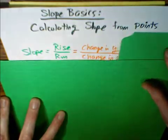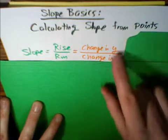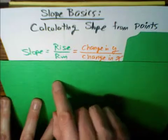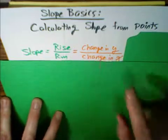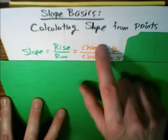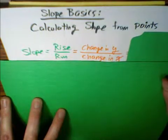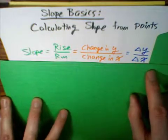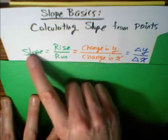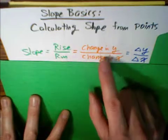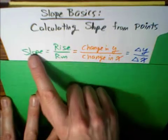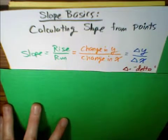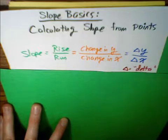So rise over run really means changing our y values. When you go up, you are changing your y value, and then when we go to the right, when we run, we are changing our x value. So slope is change in y over change in x. And this can be rewritten with these triangle symbols pronounced delta. So again, slope is rise over run, which means change in y over change in x. Or slope is delta y over delta x. The triangle delta means change in.